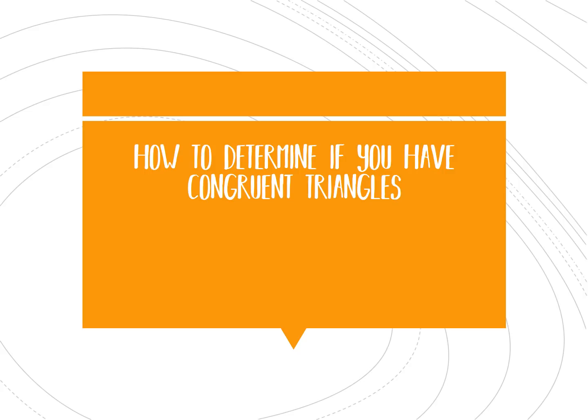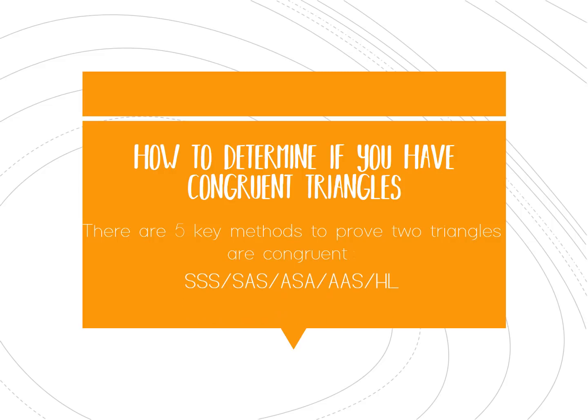Hello, ladies and gentlemen. Today we're going to talk about and figure out how we can determine if two triangles are congruent. We are going to use our five different methods to prove if two triangles are congruent. If you remember back to that foldable we talked about: SSS, SAS, ASA, AAS, and HL. So you're going to need your foldable, something to write with, and maybe a calculator.